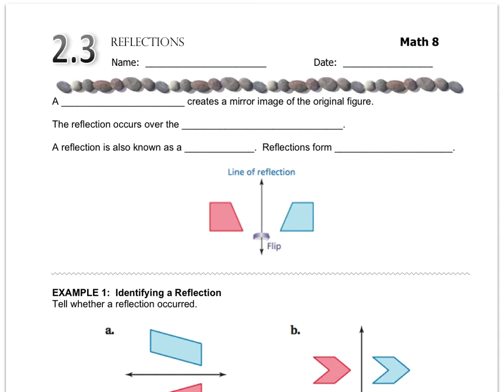The next transformation we're going to look at is a reflection, and a reflection creates a mirror image, which is why when you think of looking at your reflection, it's looking through a mirror, typically. The reflection occurs over this thing called the line of reflection, or sometimes you'll hear it called the line of symmetry.